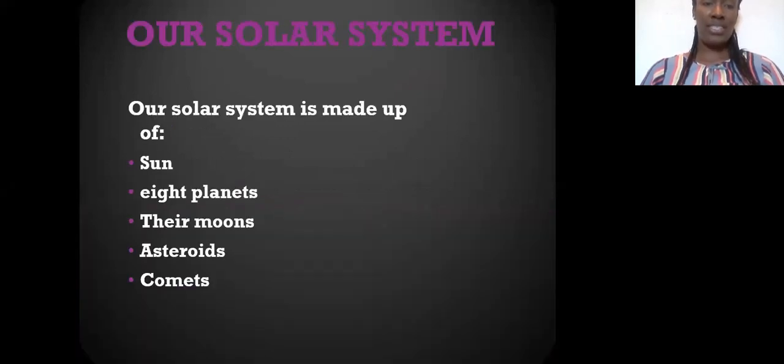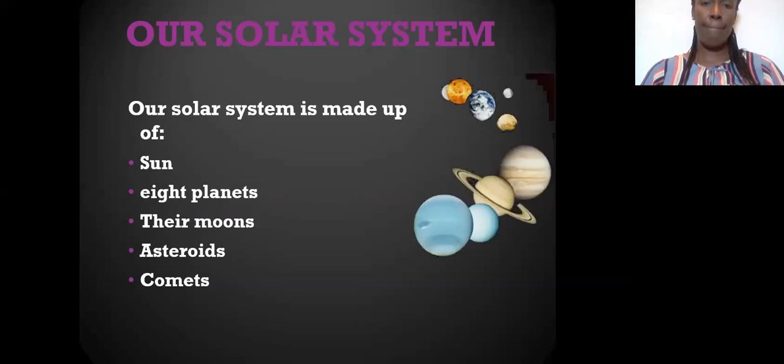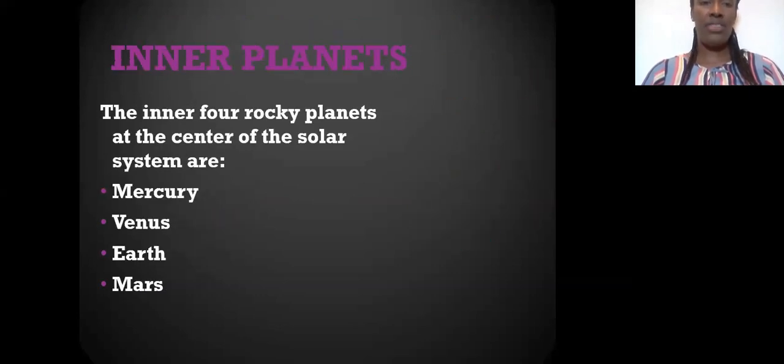Our solar system is made up of the Sun, eight planets, their moons, asteroids, and comets. Let's look at the inner planets. These are the rocky planets. If an astronaut goes out into space, if they stand on the planet, there should be no problem because it is a solid rock. They are the four closest planets to the Sun: Mercury, Venus, Earth, and Mars. Remember, my very educated mother, they're the first ones.